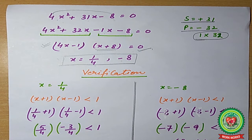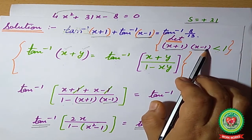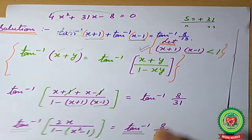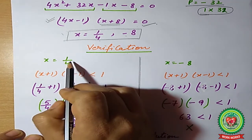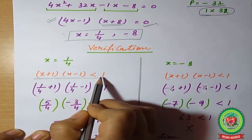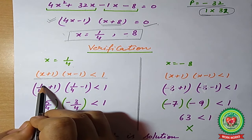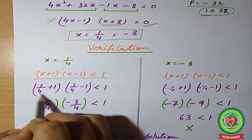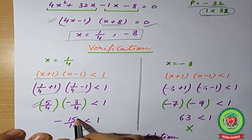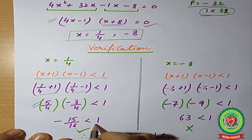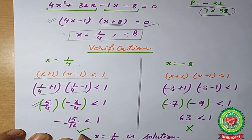We have two solutions, so we need to verify which is the required one using the condition (x+1)(x−1) < 1. For x = 1/4: (1/4 + 1)(1/4 − 1) = (5/4)(−3/4) = −15/16. Since −15/16 < 1, the condition is satisfied. Therefore x = 1/4 is a valid solution.